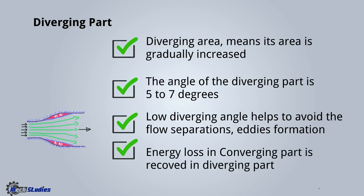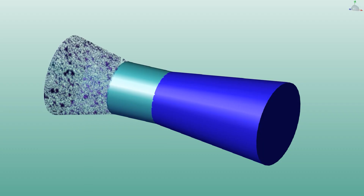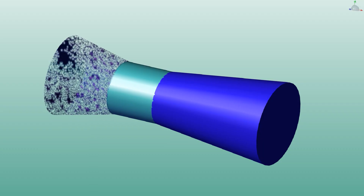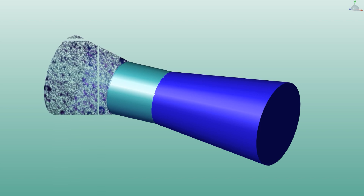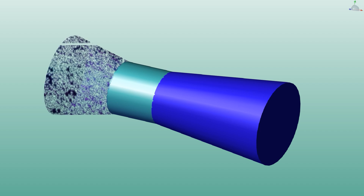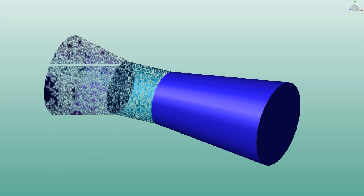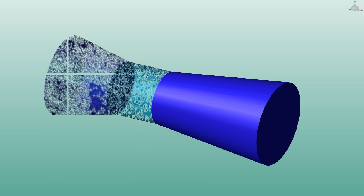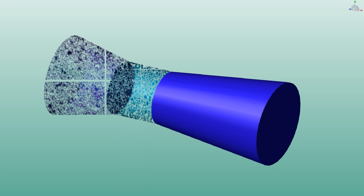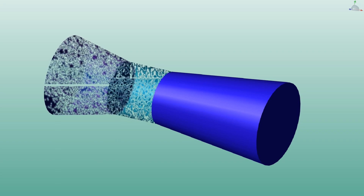Energy loss in the converging part is recovered in the diverging part. Liquid coming from the inlet pipe enters the converging part, then enters the throat — which is a high-velocity zone where velocity is very high. After the throat, liquid flows through the diverging part where velocity is low. This is how liquid flows through this Venturimeter.